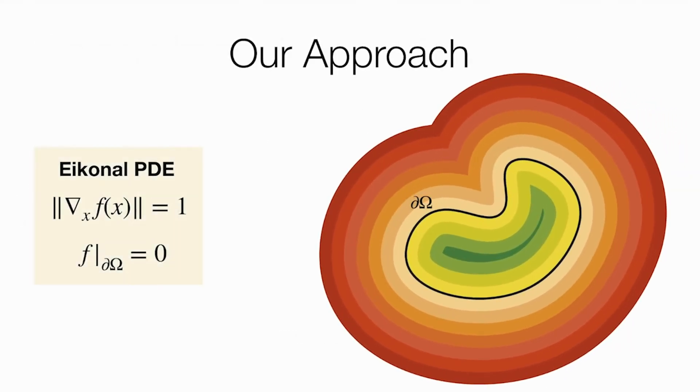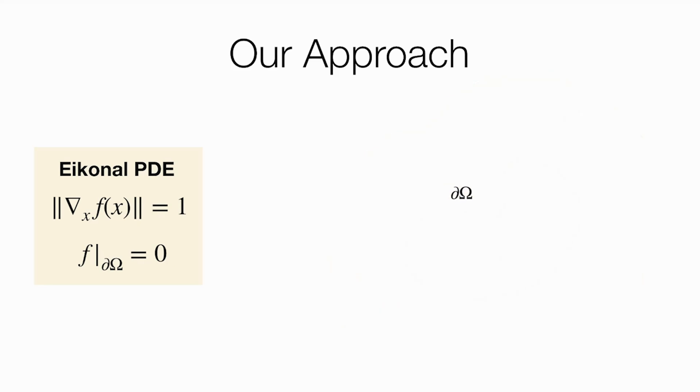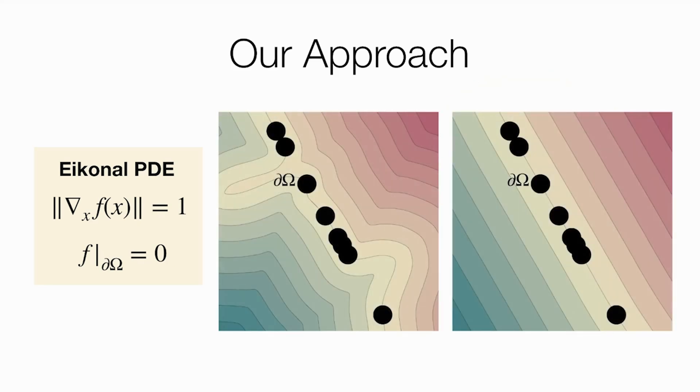We utilize the connection between sign-distance functions and the Eikonal partial differential equation. Given a well-behaved boundary, the unique Eikonal solution is the SDF with respect to this boundary. However, for finite point-cloud boundary, the Eikonal is ill-posed with multiple SDF solutions, as shown here, for example.